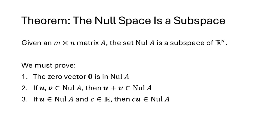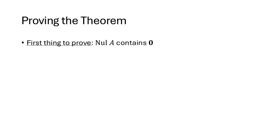We haven't actually established that the null space is a subspace of R^n, so let's prove that now. A subspace must satisfy three properties: it contains the zero vector, it's closed under addition, and it's closed under scalar multiplication. For the first property: any matrix times the zero vector equals the zero vector, so the zero vector is always in the null space.